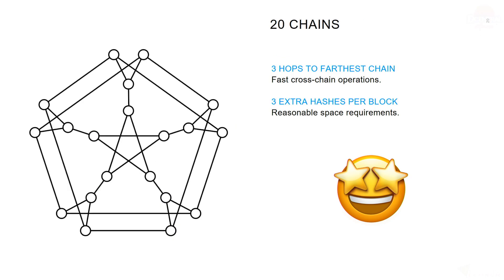But you need to scale up further. Here's what it looks like with 20 chains. The only difference between this and the previous one is that it's three hops to the farthest chain. We still stay with the same three hashes extra per block, so we have reasonable space requirements and fast cross-chain operations.